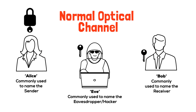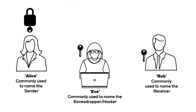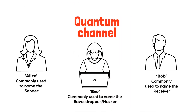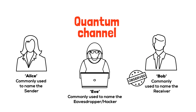What Alice and Bob need to exchange keys is a special channel — a quantum channel. On a quantum channel, Alice would send just one single photon at a time to Bob. This photon can exist in many states simultaneously until it's measured for the first time, and then its state becomes fixed — in quantum speak, its wave function collapses when it's observed.